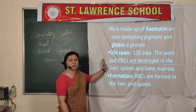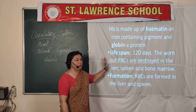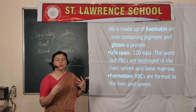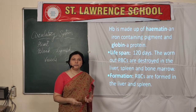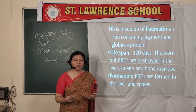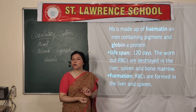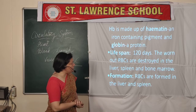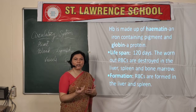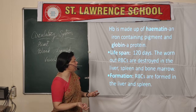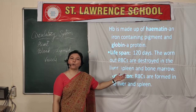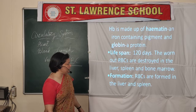The lifespan of RBCs is 120 days and they are formed in the red bone marrow, which is found in the hollow bones of our body. After 120 days, the RBCs get destroyed. They are destroyed in the liver, spleen, and also in the bone marrow.